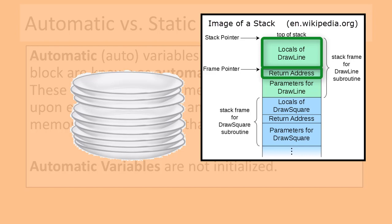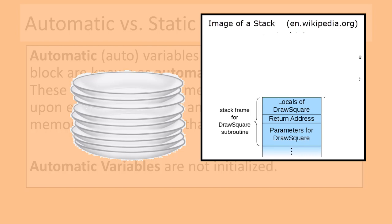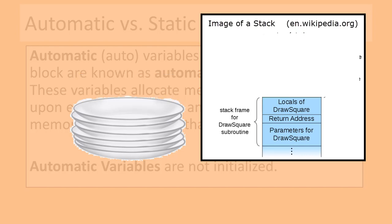Local variables remain on the stack as long as the function is active, but when the function ends, that area of the stack is no longer needed and those memory locations are released and can be reused when a new function call occurs. Since the memory will be reused for something completely different, it can be said that the contents of the variable are lost and no longer available when the function goes out of scope.